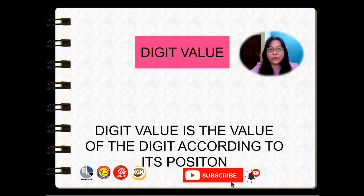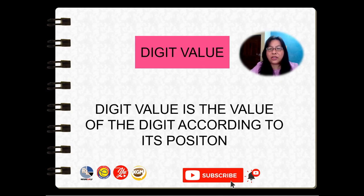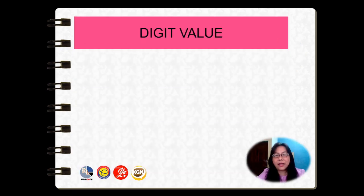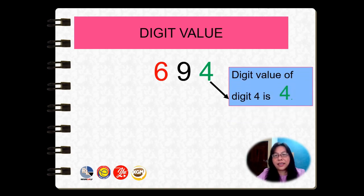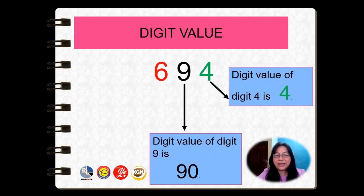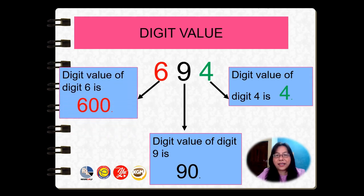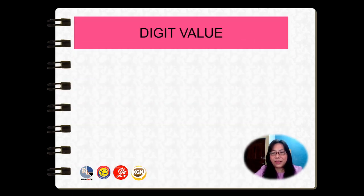Now let us learn about digit value. Digit value is the value of the digit according to its position. Example — six hundred and ninety-four. What is the digit value of digit four? Digit value of digit four is just four. Digit value of nine is ninety. Digit value of six is six hundred.